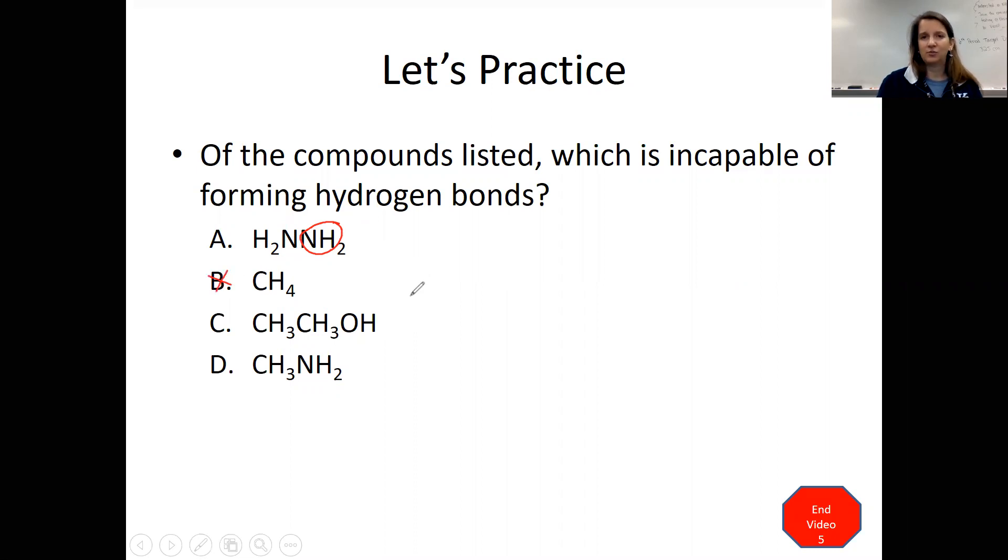Letter C, this OH group, that's called an alcohol group. We do see those OH groups creating hydrogen bonds, because the way that this is bent here at the end of the molecule creates this easy way of attracting nearby CH3CH2OH molecules, creating that interaction between them. And then CH3NH2, there we go. That's our hydrogen bond into nitrogen, oxygen, or fluorine. So only letter B here would be incapable of forming hydrogen bonds.